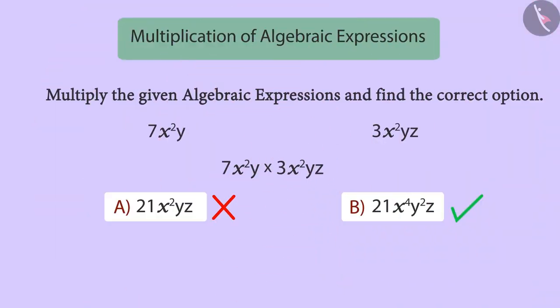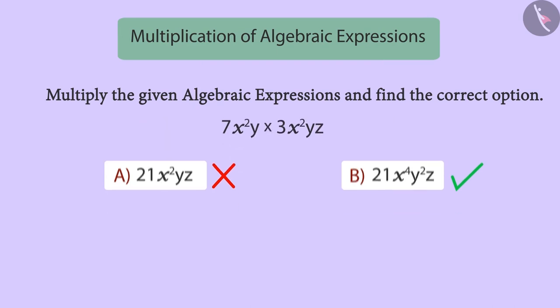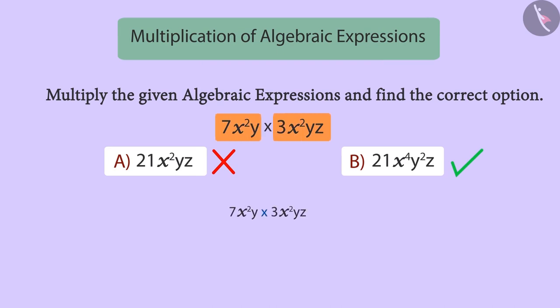Let's see why. In the previous session, we learned how to multiply two monomials. When we multiply two monomials, we make a group of coefficients and a group of algebraic factors or variables. We just need to multiply the coefficients together and multiply the algebraic factors together.